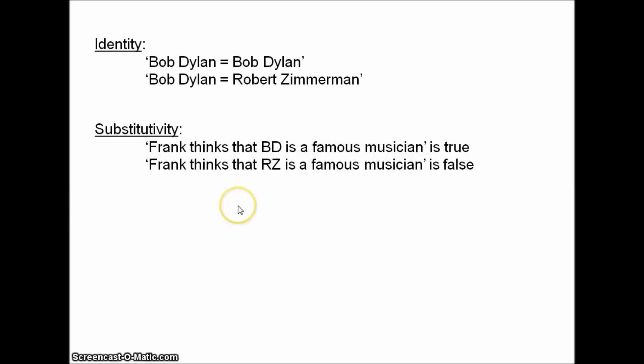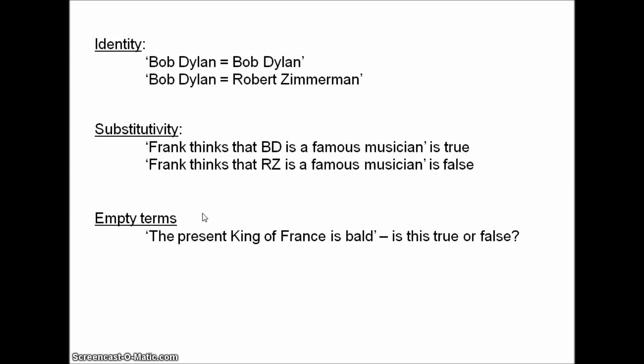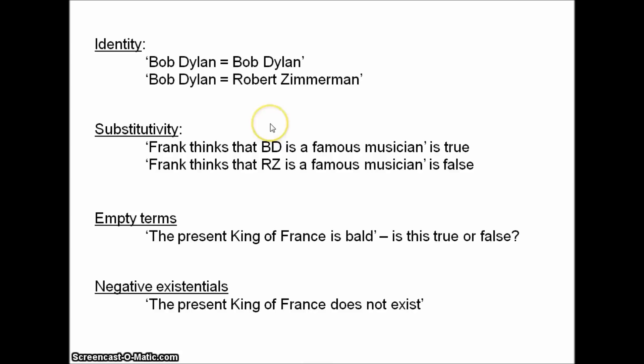Then we had a puzzle about empty terms. 'The present king of France is bald' — well, there is no present king of France, so is this proposition true or false? Then we had negative existentials. 'The present king of France does not exist' seems to be true, but if 'the present king of France' denotes something, then that thing must in some sense exist, making our statement false. On the other hand, if it doesn't denote anything, the statement should be simply meaningless.